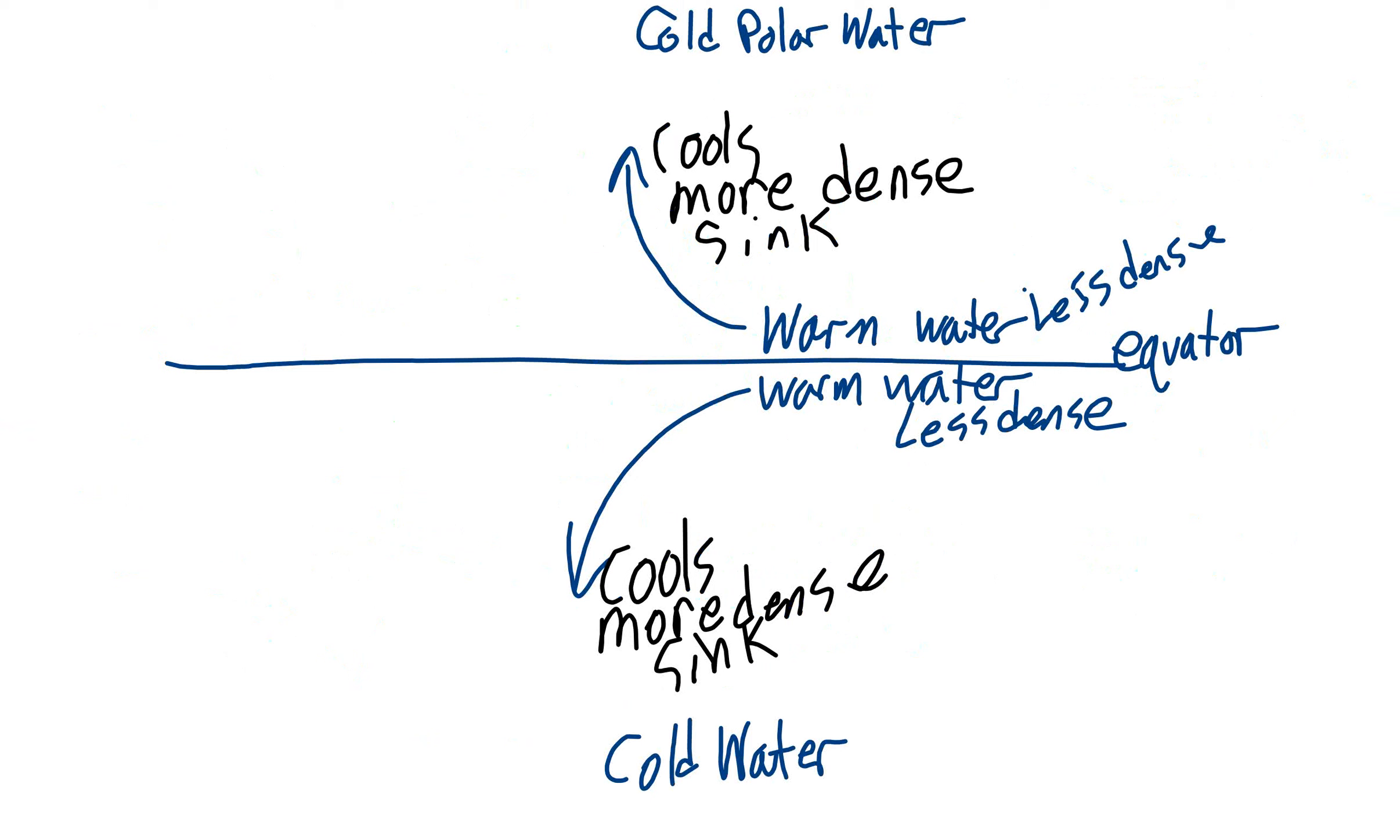And as it cools, it's going to become more dense because these water molecules are getting closer and closer together. And as they get closer together, they become more dense and they're going to start to sink. So if warm water moves towards the pole, it gets cooler, denser, and it sinks.